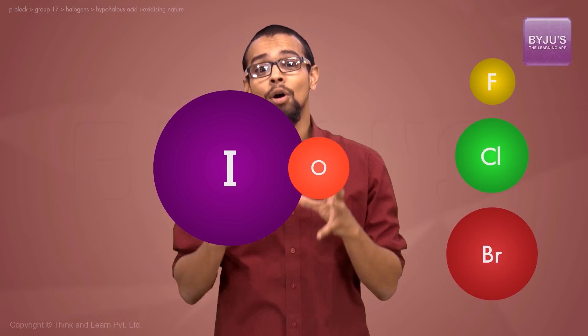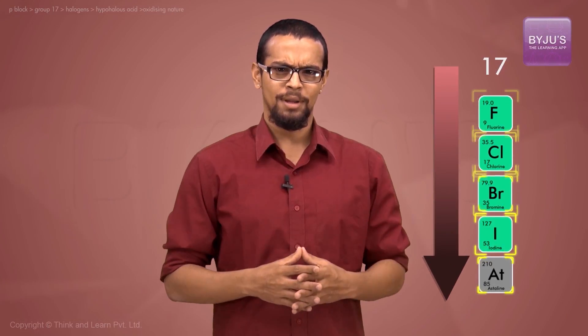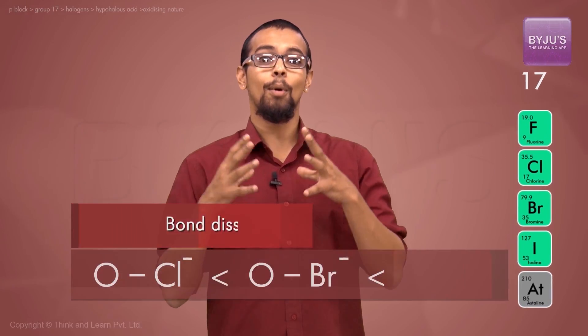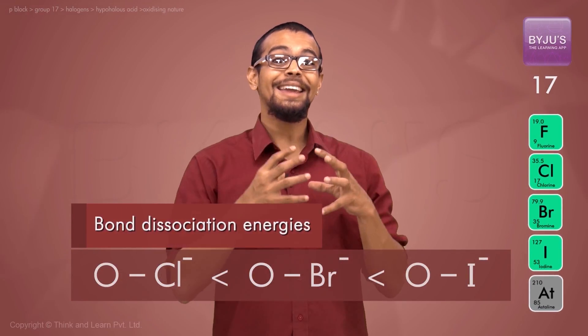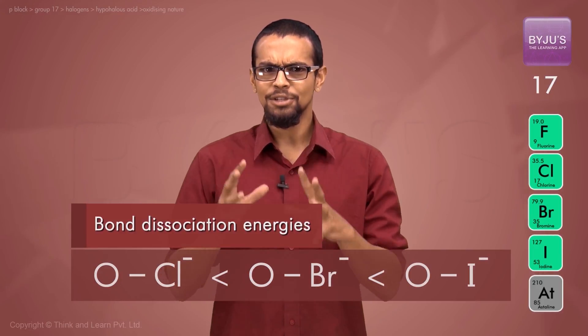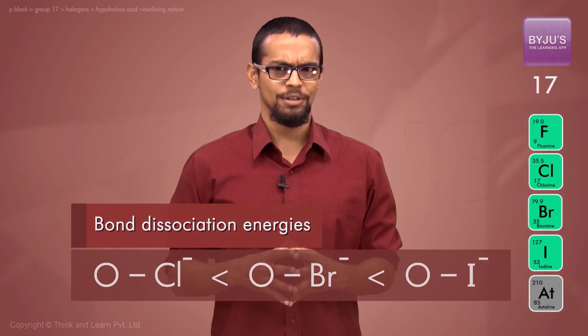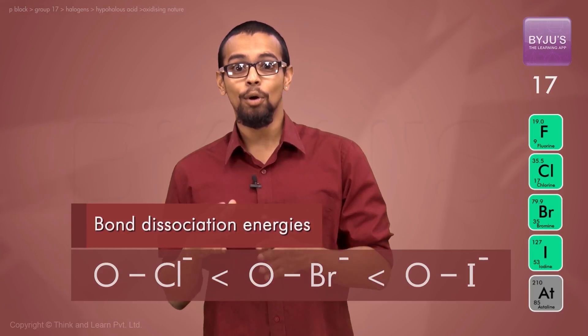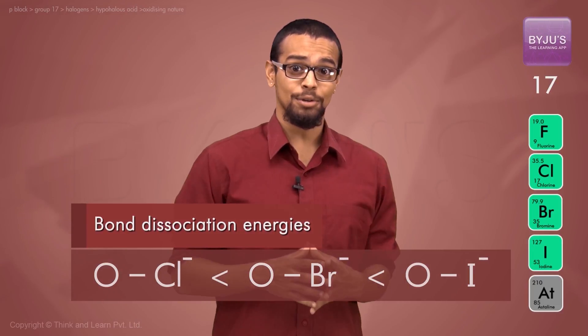Hence, the stronger the bond. In other words, as you go down the group, the hypohalide bond is increasingly stronger, increasingly stronger O-X bond, implying breaking that bond or cleaving that bond away to release oxygen is much harder.